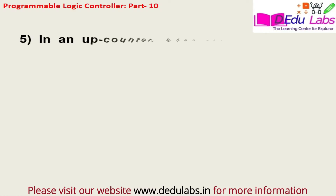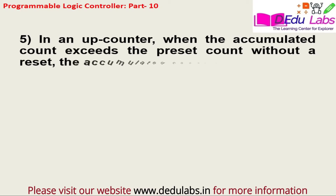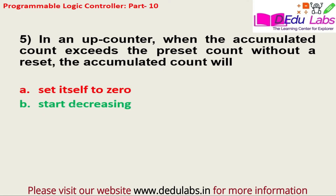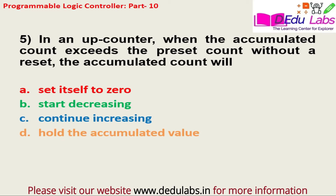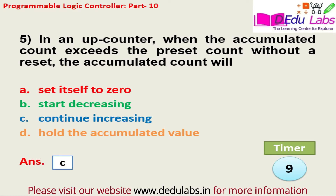Question number five: In an up counter, when the accumulated count exceeds the preset count without the reset, the accumulated count will be — option A, set itself to 0; option B, start decreasing; option C, continue increasing; option D, hold the accumulated value. The answer is option C, that is continue increasing.